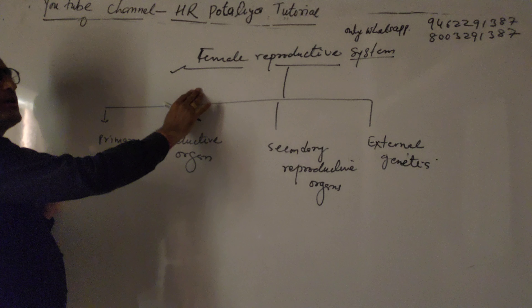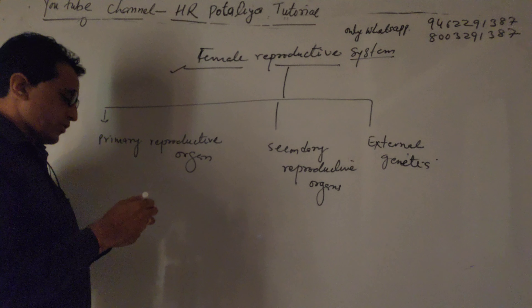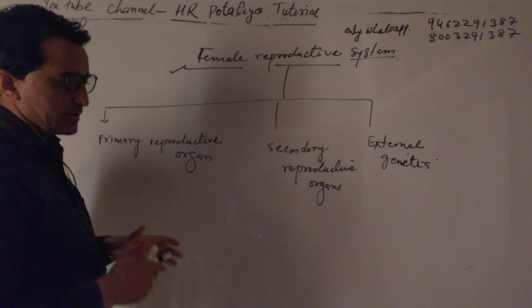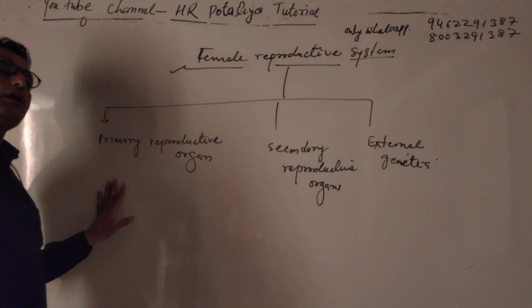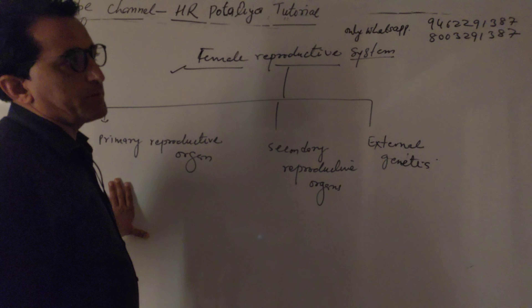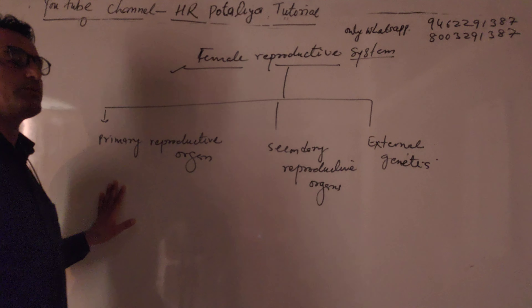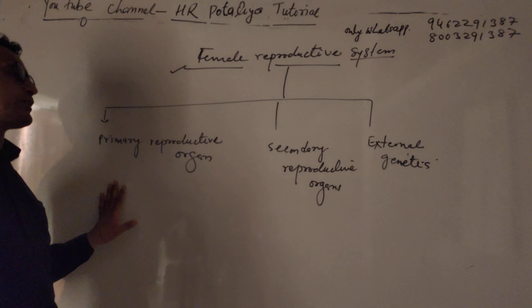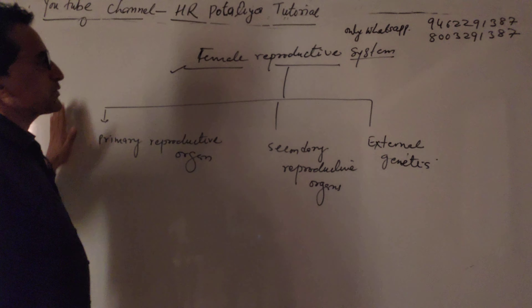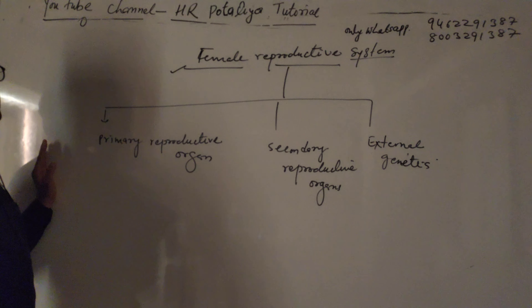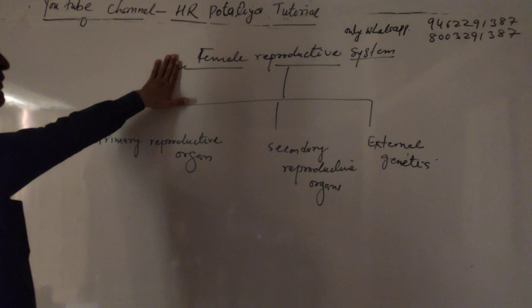The female reproductive system is more complex compared to the male because the female has a menstrual cycle, pregnancy, and birth process. In addition, the lactation process — milk secretion — will also be there. That is why the female reproductive system is more complicated compared to the male.